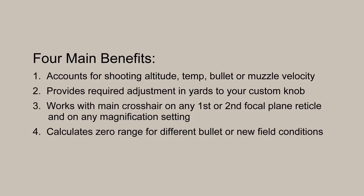First, the calculator will compute the adjustment for changes in shooting altitude, temperature, bullet, or muzzle velocity. Second, it provides the required adjustment in yards to your custom knob. Third, it works with the main crosshair on any first or second focal plane reticle and on any magnification setting. And fourth, it calculates the required zero range when sighting in for a different bullet or new field conditions.